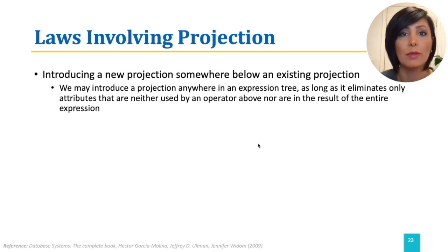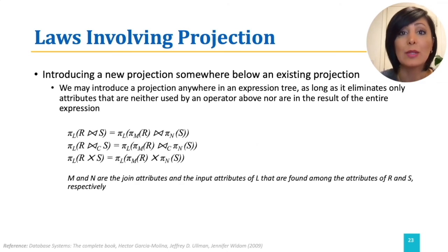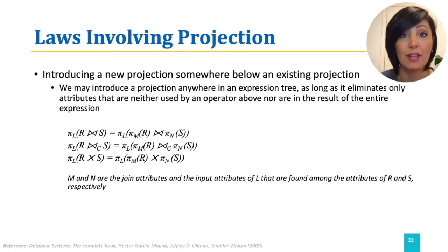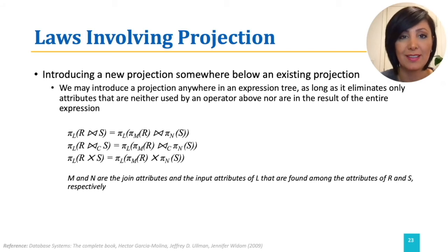For example, the first law says that we can project each of the relations of a join before performing the join. The second law is the same for theta join. And the third law indicates prior application of the projection for arguments of the cross product.